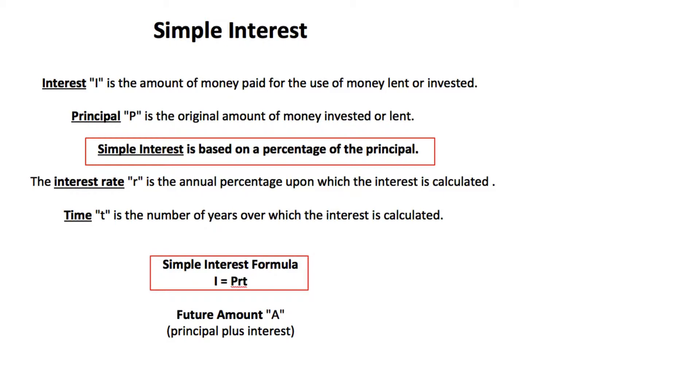The interest rate denoted by variable r is the annual percentage upon which the interest is calculated. So just a very basic example here, if I had a hundred dollars which is my principle and my interest rate is 4%, then my interest would be 4% of that hundred. So we multiply to get four dollars.